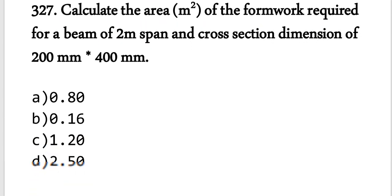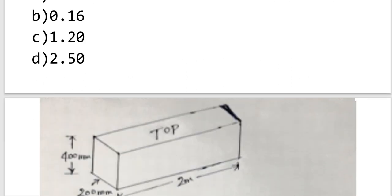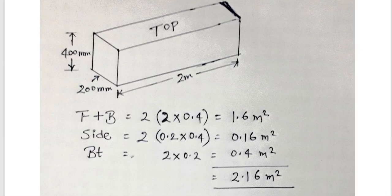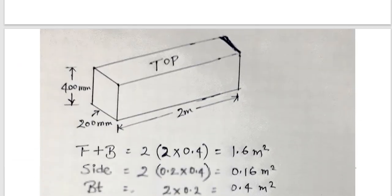Coming to question number 327: Calculate the area in square meters of the formwork required for a beam of 2-meter span with a cross-section dimension of 200 mm by 400 mm. We draw the beam: depth is 400 mm and width is 200 mm, with a length of 2 meters.